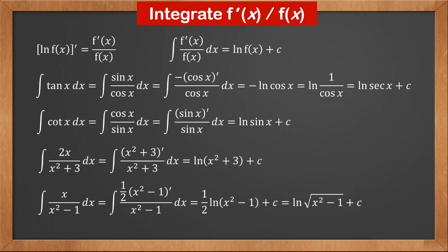For the integral of x over x squared minus 1 dx, we can see that the derivative of the denominator x squared minus 1 is 2x. The numerator is half of this, so the integral is half ln(x squared minus 1) plus c, which is ln root(x squared minus 1) plus c.